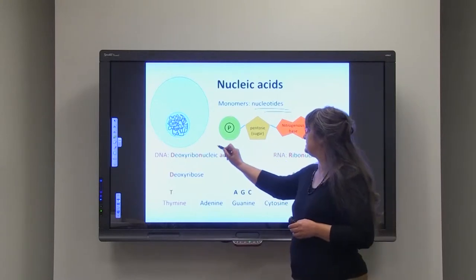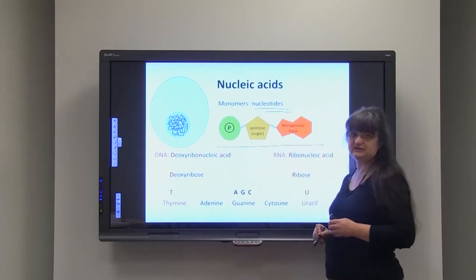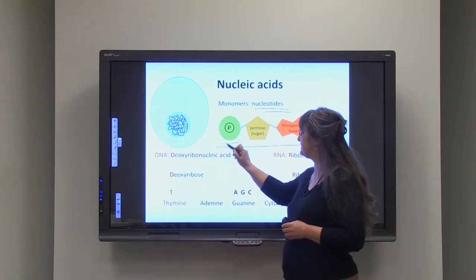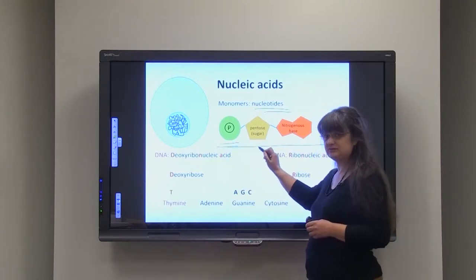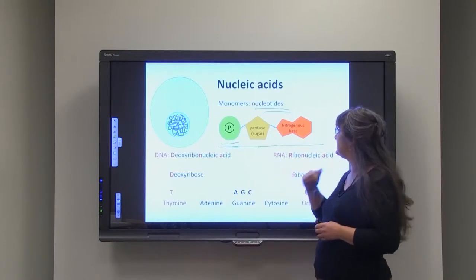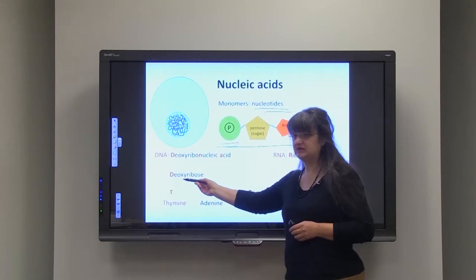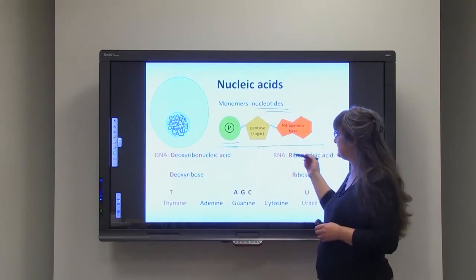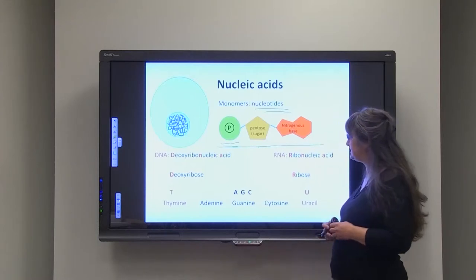This is the basic structure of the nucleotides. As you can see, what they have in common is a phosphate group, a pentose sugar—a sugar that has five carbon atoms—and that pentose sugar could be deoxyribose in the case of DNA, or it could be ribose in the case of ribonucleic acid or RNA.